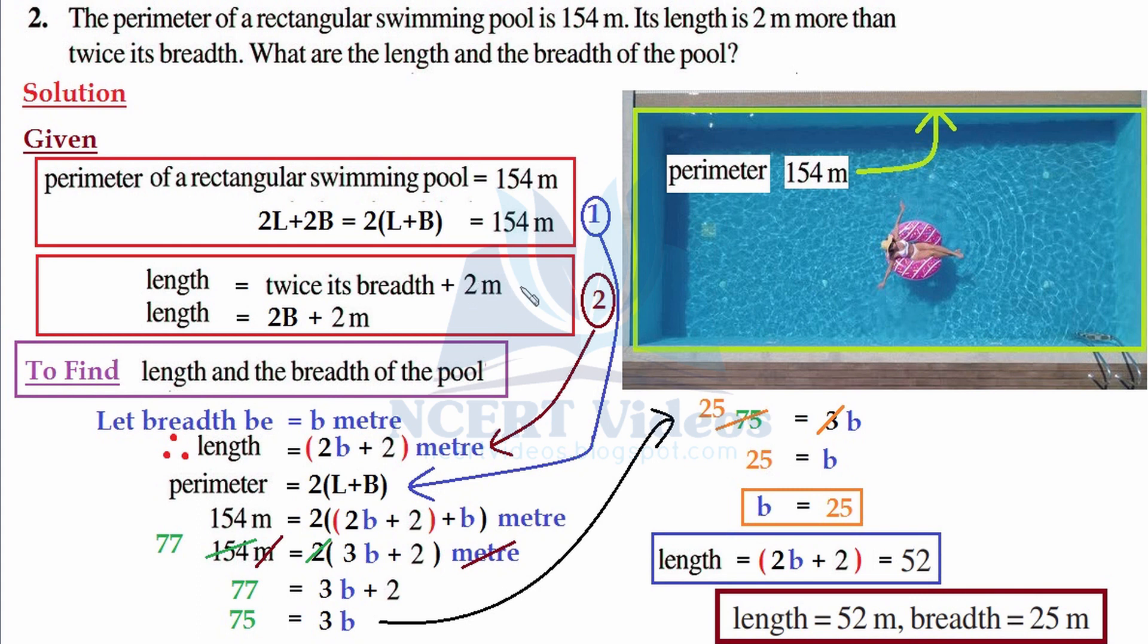The second statement that man said was: length is equal to twice its breadth and we add 2 meters to it. That is very clear: the length is, in terms of mathematics, twice of breadth